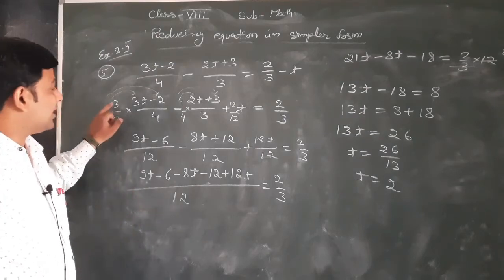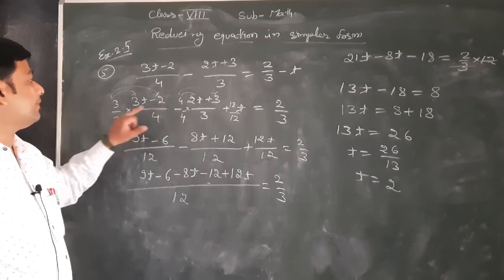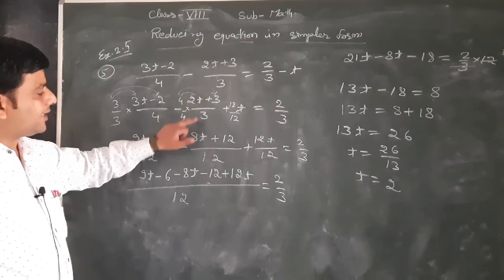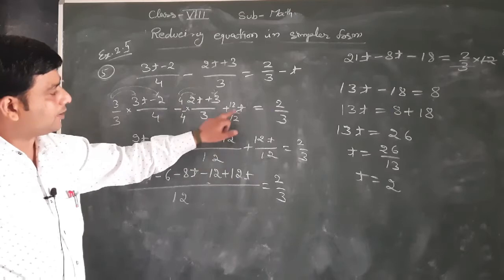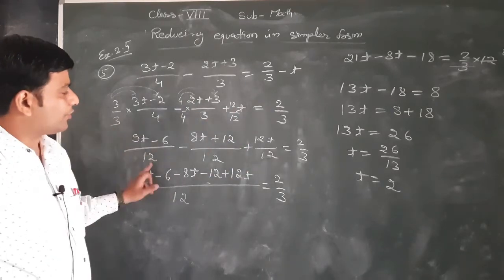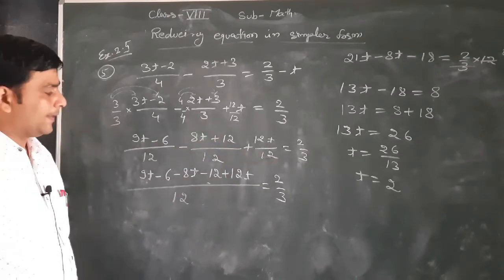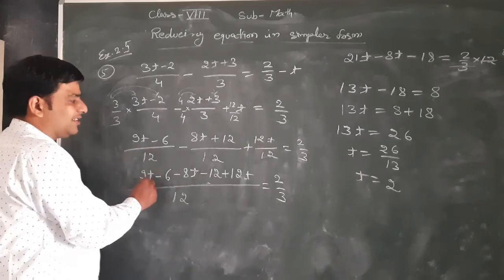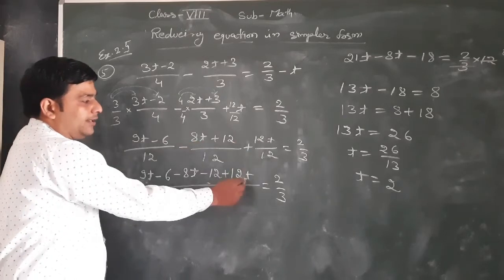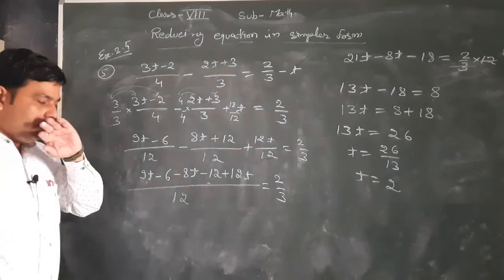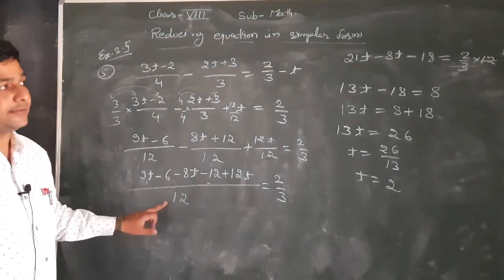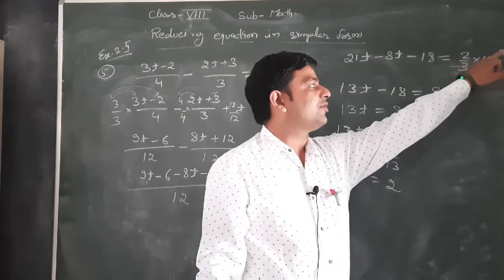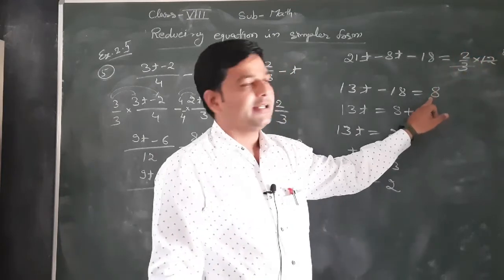Solve करते हैं। Distributive property के according: 3 को 3t से multiply करेंगे — 9t, 4×3 = 12, 12t as it is। सभी के denominator में 12 आ गया — LCM 12। तीनों के denominator में 12 same है। 9t - 6 - 8t - 12 + 12t। 12 divide में है, multiply में जाएगा, transpose करेंगे। 3 के table से cancel होकर 4 रहेगा, और 2×4 = 8 आएगा।